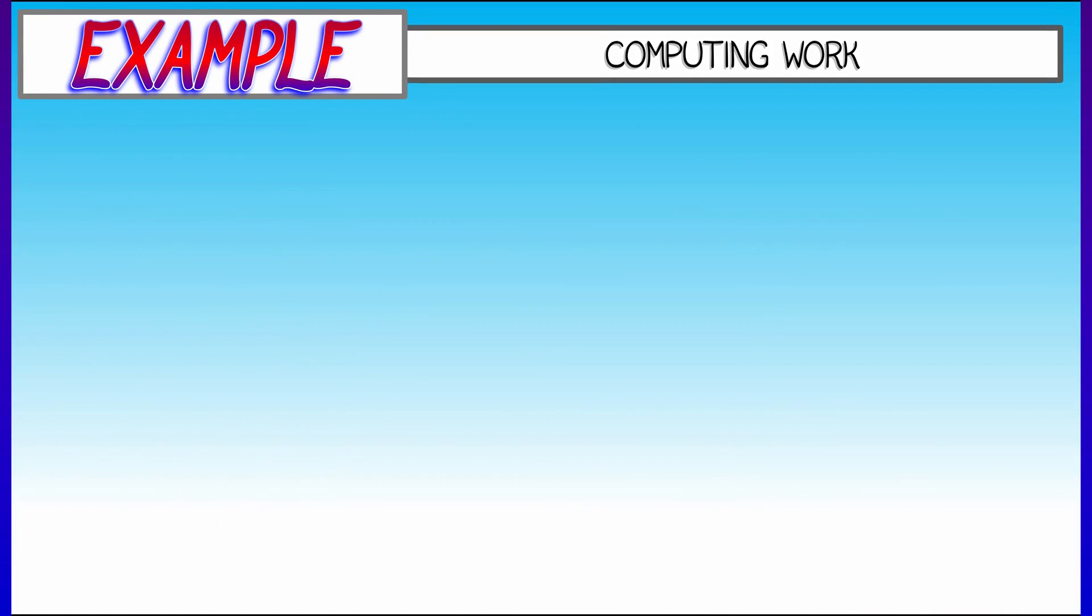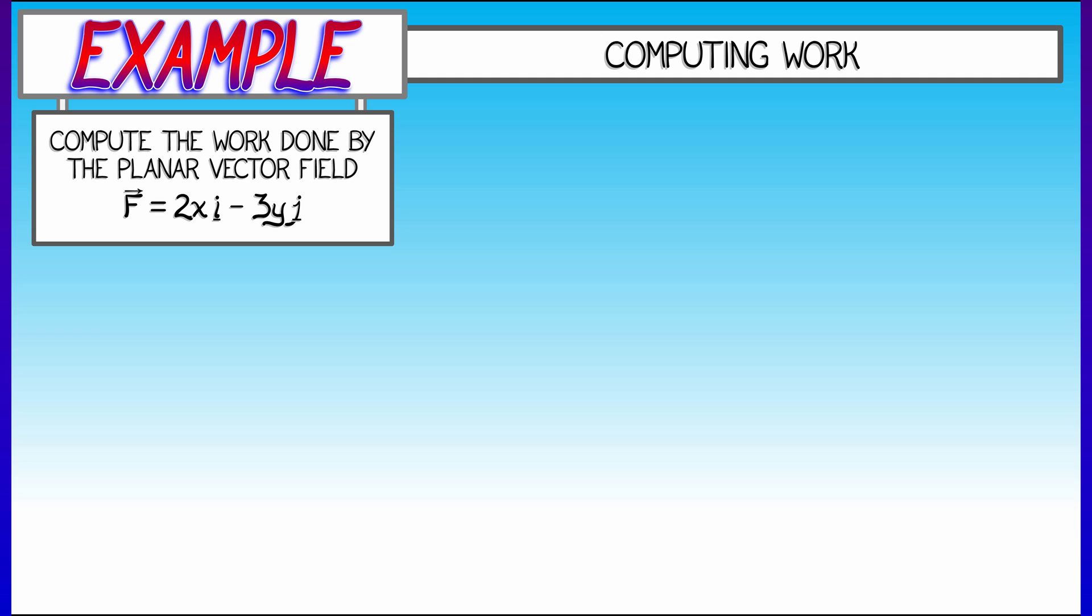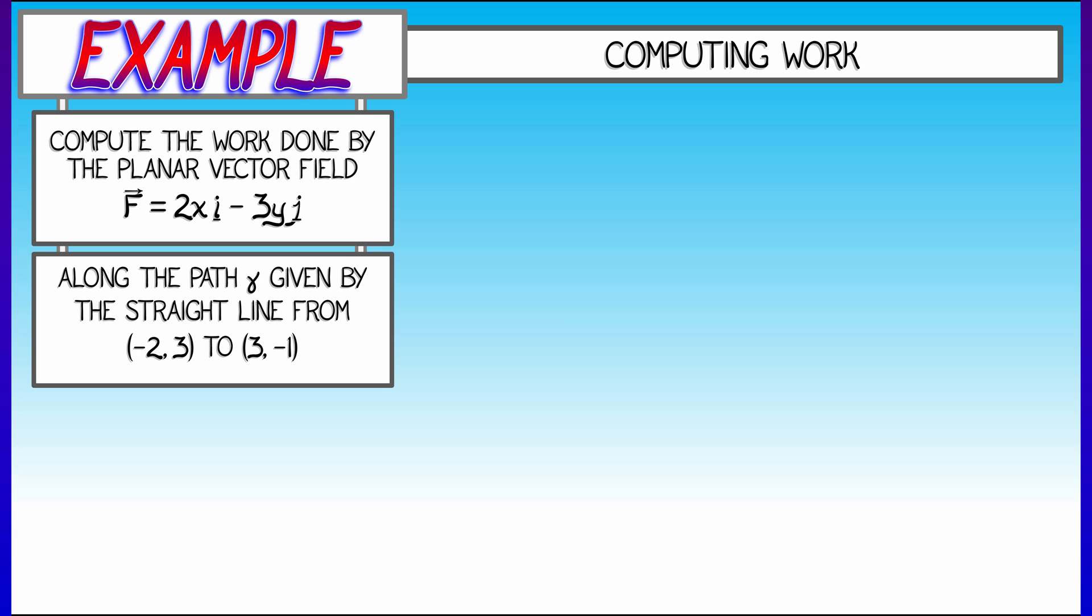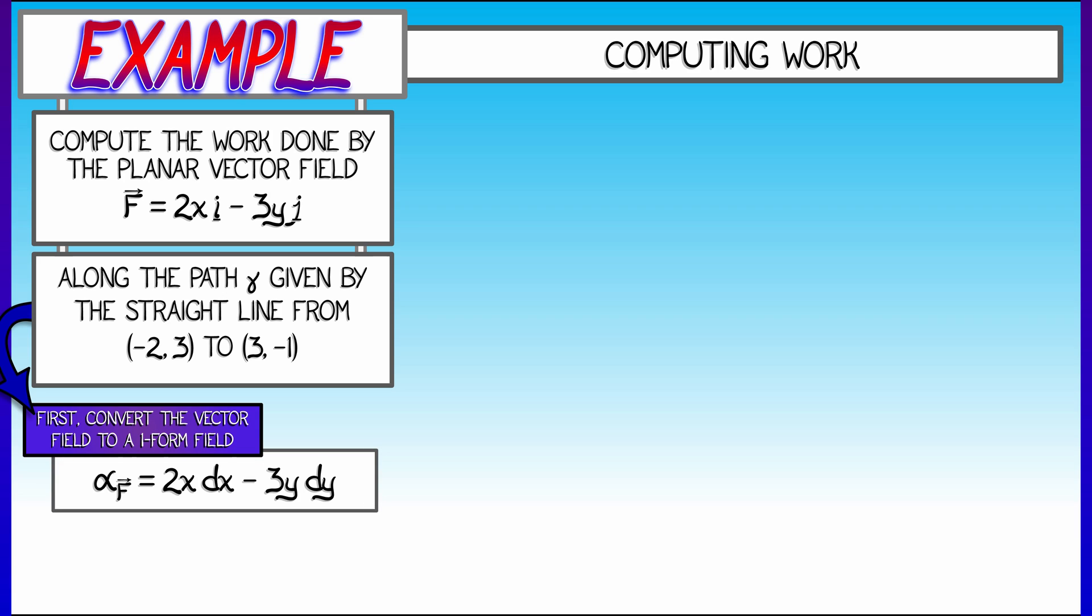Let's say we're looking at a really simple example. Let's say a linear vector field, 2xi minus 3yj, and we have an equally simple path, a straight line path from the point negative 2 comma 3 to 3 comma negative 1. The first thing that one would do is convert that vector field to a work one-form, 2x dx minus 3y dy.